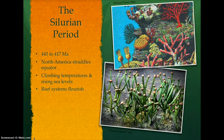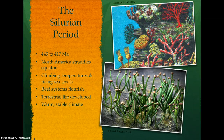With no leaves or roots, the earliest known vascular plants, known as Cooksonia, appeared in the warm, stable climate of the period. Scorpions and millipedes were the common land animals during the Silurian period.